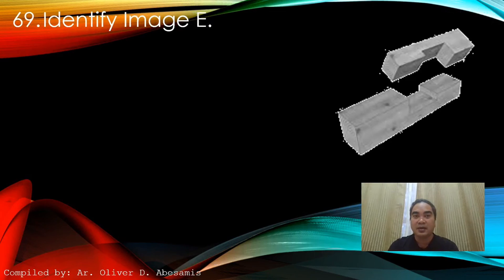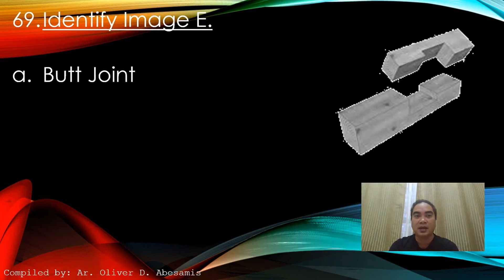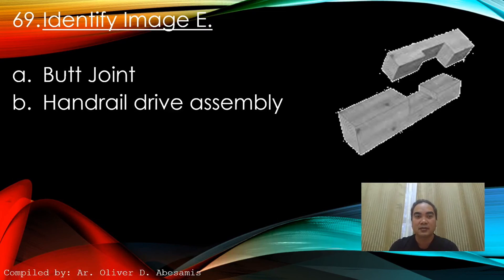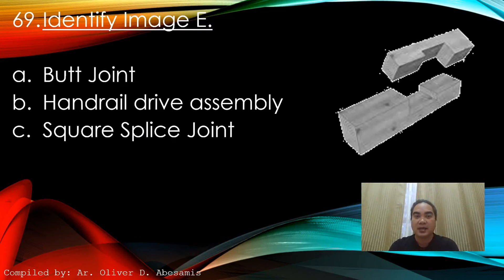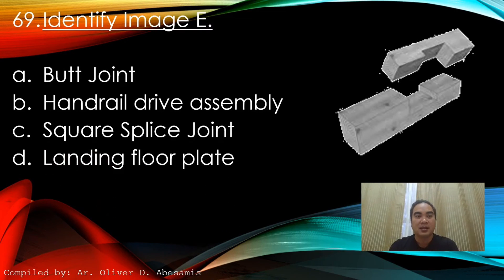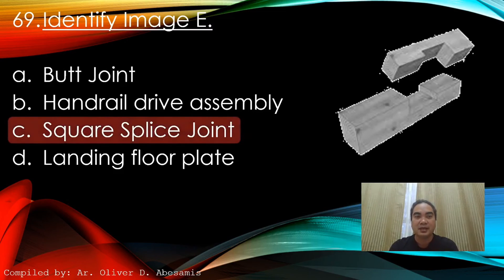Identify the image. A. Butt joint. B. Handrail drive assembly. C. Square splice joint. D. Landing floor plate. Answer: C. Square splice joint.